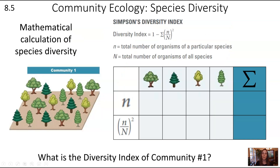We can calculate this mathematically using a formula called Simpson's Diversity Index. This formula is on your formula sheet, so you don't need to memorize it, but you do need to know how to use it. See if you can figure out what this means and try to calculate the values in the table to find the diversity index of community number one.